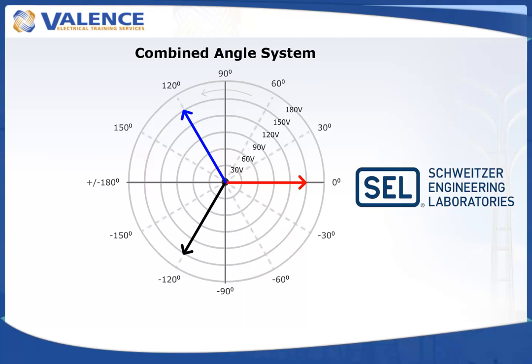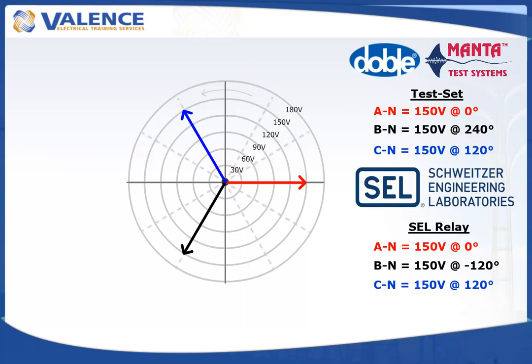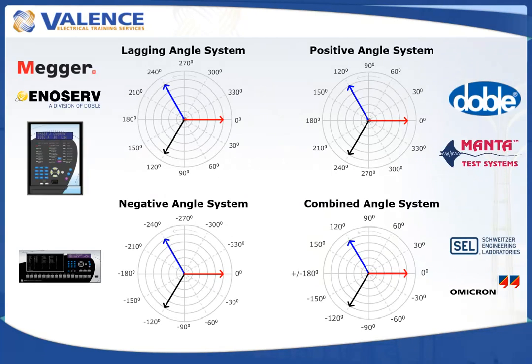An SEL relay would report these angles. When we get a picture of the phasors from each device, you can see that the phasors are in the same place, but the angles have different labels.